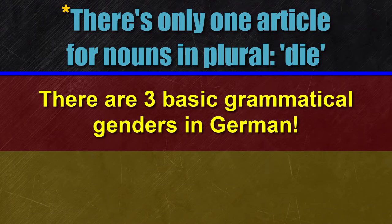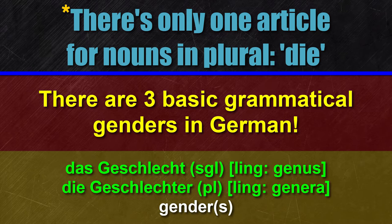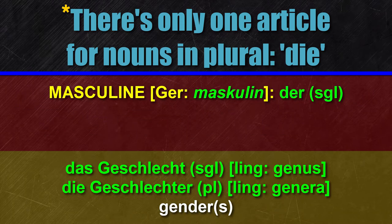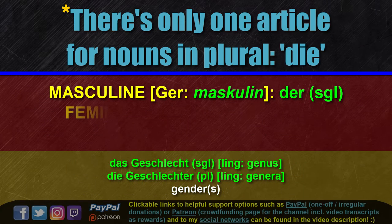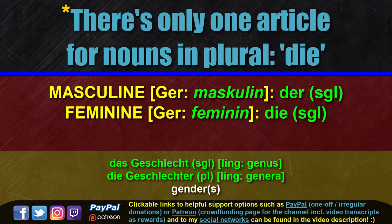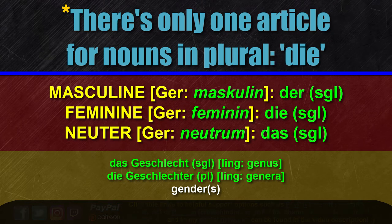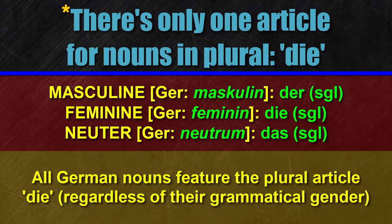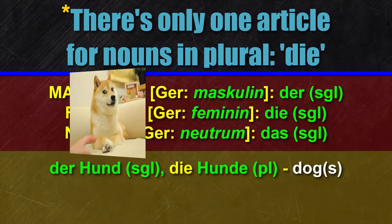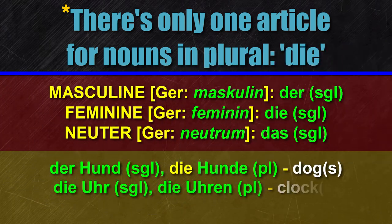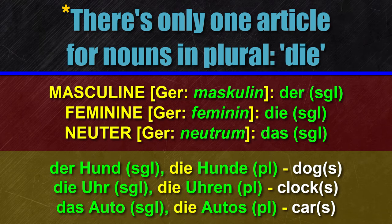Rule number two: all German nouns in plural feature the article DIE. As you might know already, there are three basic grammatical genders in German — 'das Geschlecht' (singular), 'die Geschlechter' (plural). Each gender relates to a particular article. Masculine nouns in singular are related to the article DER, feminine nouns in singular to DIE, and neuter nouns in singular to DAS. However, when you use the plural forms, you always use the plural article DIE. For example: DER HUND (singular), DIE HUNDE (plural); DIE UHR (singular), DIE UHREN (plural); DAS AUTO (singular), DIE AUTOS (plural).